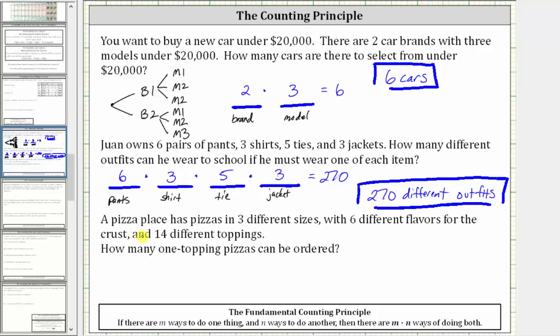When ordering a one-topping pizza, there are three things to do: select the size, select the flavor of the crust, and select the topping.